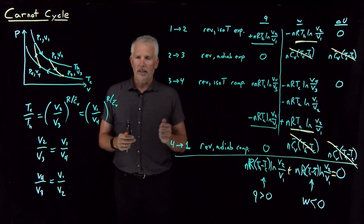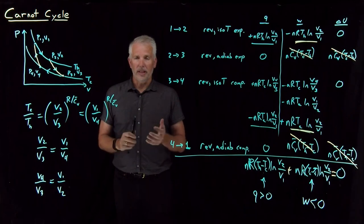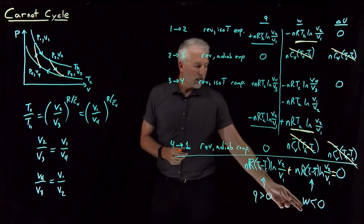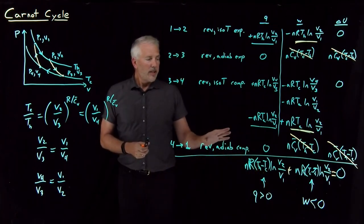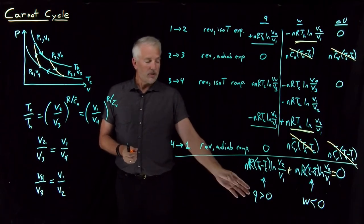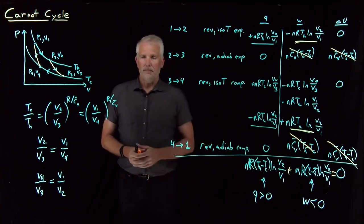In a nutshell, this cyclic Carnot process has converted heat into work. That sounds like a fairly useful thing to be able to do — convert heat into work and get some useful work out of the process. So next we'll explore in more detail the processes that allow us to convert heat into work.